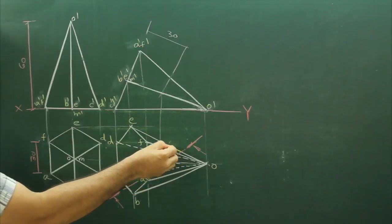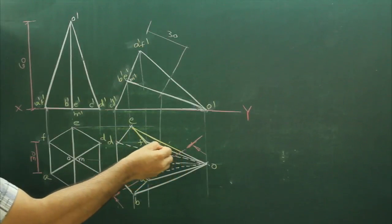So this much portion is damped. This is the remaining portion because they have said removing the apex.